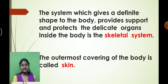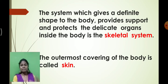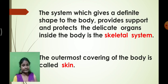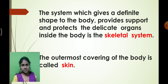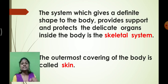The skeletal system is different in different animals. The basic function is to provide shape and structure to the animal, and to protect many soft organs present in our body — like the brain, heart, and lungs. These soft organs are protected by bones. On the outside of the bones there is a covering of muscles. The outermost covering of our body we call the skin.